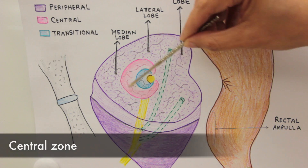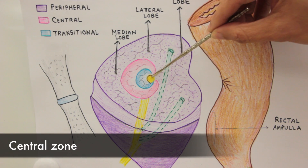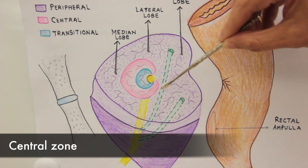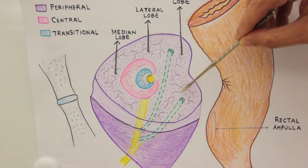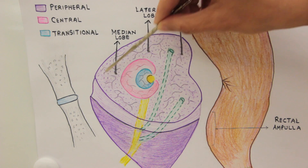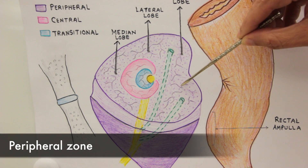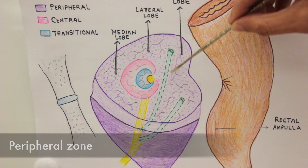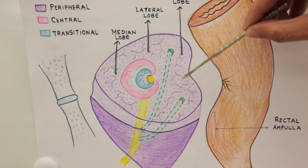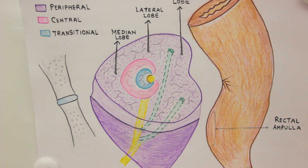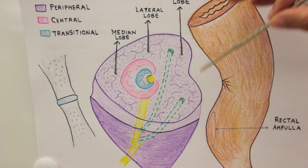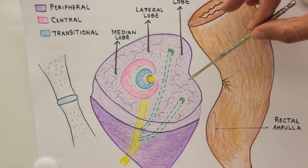Then there is a central zone, and then the largest zone is the peripheral zone. This peripheral zone contains the largest-sized glands and they are highest in number.